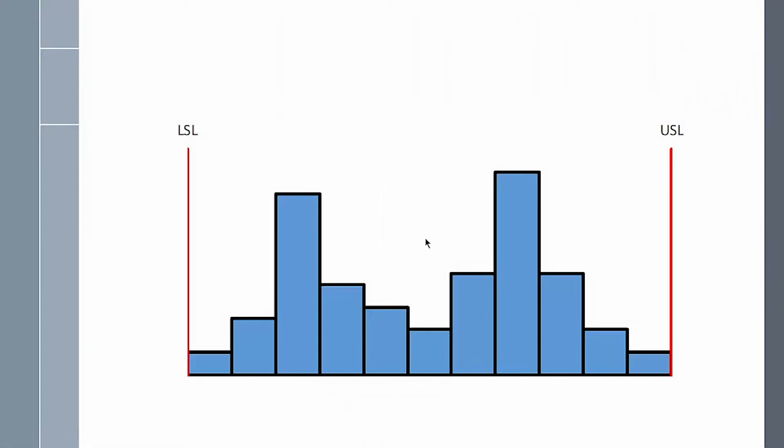And here's our fifth histogram. What does this histogram tell you about your supplier's process? Well, first of all, histograms should only have one peak. This one has two. That's an indication that there are at least two processes present in your supplier's process. They could be two machines, two shifts, two raw materials.